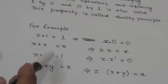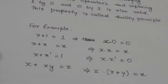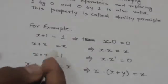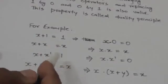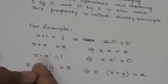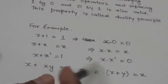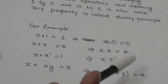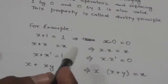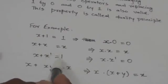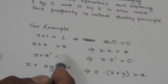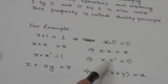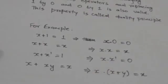Look at this expression: x + x' = 1. We will obtain its dual by replacing the plus operator by the dot operator and 1 by 0, giving x · x' = 0. Since the original expression is true, its dual expression will also be true.